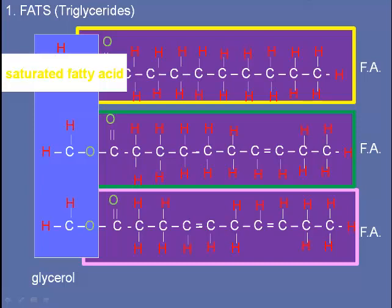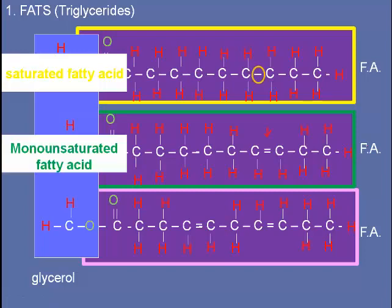The second fatty acid has one double bond between carbons, so we say it's an unsaturated fatty acid. Since there's only one double bond between carbons, we call it a monounsaturated fatty acid. When we talk about saturation, what we're really talking about is whether the carbons are holding the maximum amount of hydrogen they can. In the case of a monounsaturated fatty acid, the answer is no — it has space for more hydrogen, because if that double bond were to break, each carbon could hold one more hydrogen.